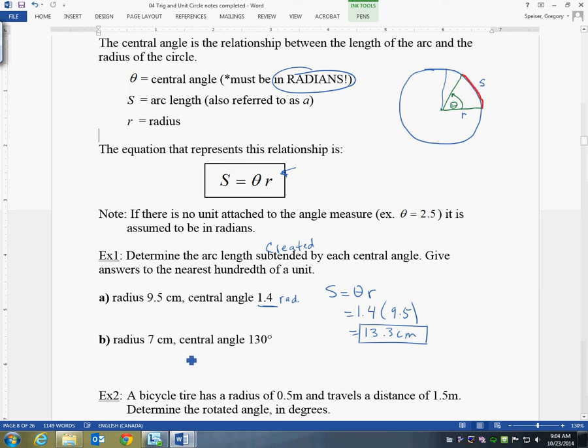Let's try the second one. I'll write S equals theta r. And now the radius is 7, but the central angle is 130 degrees. So I need to change that 130 degrees into radians, right? So I'll go, okay, 130 degrees multiplied by.